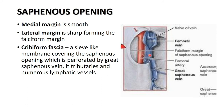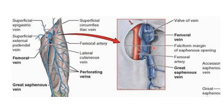The great saphenous vein is formed by the dorsal digital vein of the big toe and the dorsal venous arch. It ascends upward anterior to the medial malleolus, then posterior to the medial condyle of the femur, and enters the femoral vein by traversing through the saphenous opening.